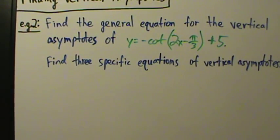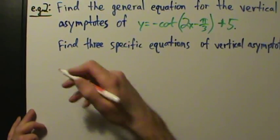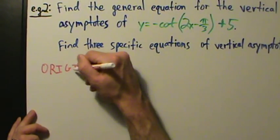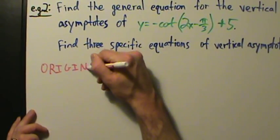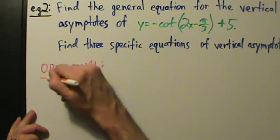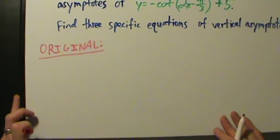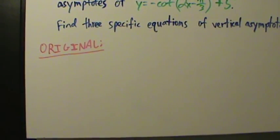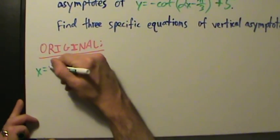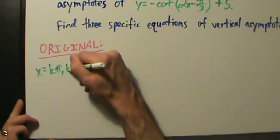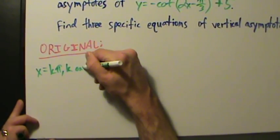The first step of the process is the original equation of the vertical asymptotes. So that's going to be x equals k pi, where k is any integer.